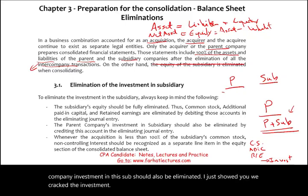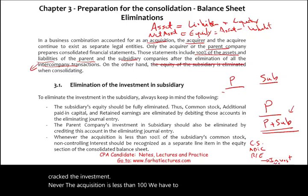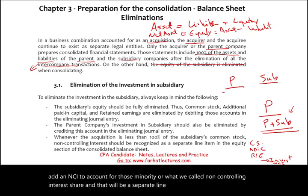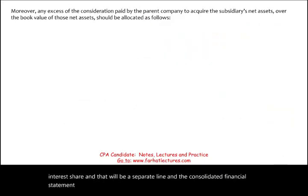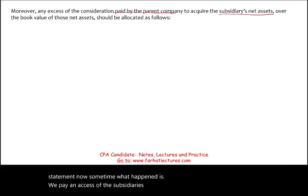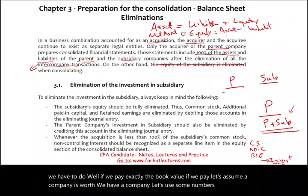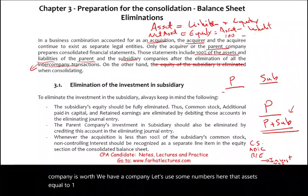Whenever the acquisition is less than 100%, we have to add a non-controlling interest (NCI) to account for the minority shareholders' share, which will be a separate line on the consolidated financial statement. Sometimes we pay in excess of the subsidiary's net assets over book value. For example, if a company has assets of $100, liabilities of $40, equity of $60, and we pay exactly $60, we simply eliminate equity for $60 and credit the investment for $60.